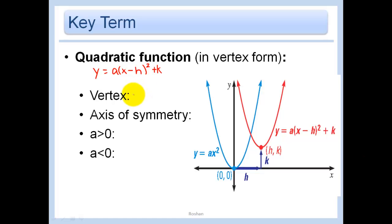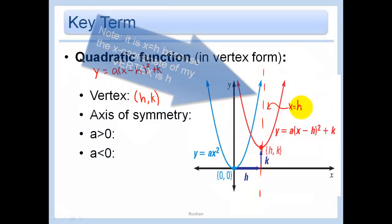That h, k is going to be our same vertex here. When I have x minus h, that quantity squared, that means that I move h units to the right. And then plus k would mean k units up. The axis of symmetry in this case would just be this line, which is x equals h.